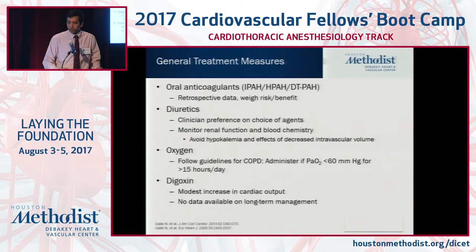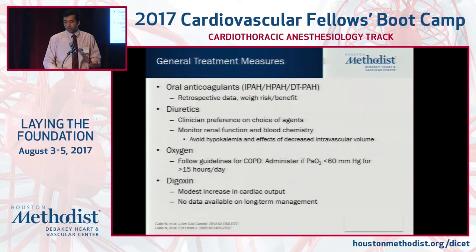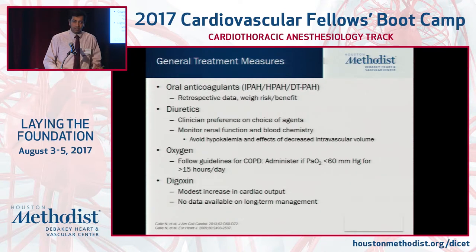We'll quickly go over some of the PH therapies. Some of the general treatment measures to address the right heart include diuretics to decrease preload, digoxin to help with contractility, and oral anticoagulants — though the data here is a little controversial, mostly recommended in patients with idiopathic pulmonary hypertension.